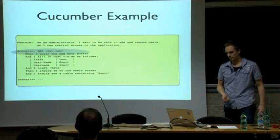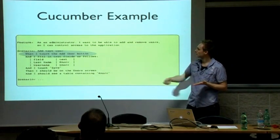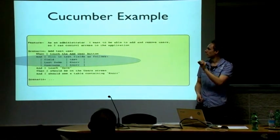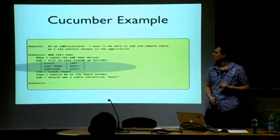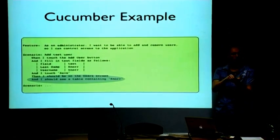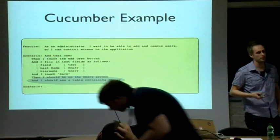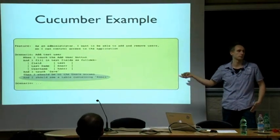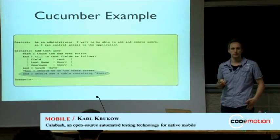Let's look at one scenario called 'add test user.' It consists of a number of steps. The first step says: 'When I touch the add user button.' Next step: 'And I fill in the text fields — the field last name should be Nor, and the field username should be nor with a small k.' Then 'I touch save.' And the last step is different — instead of 'when I do this,' it says 'then this should happen': 'I should see a table containing Nor.' That's the usual form of these Cucumber tests, and everybody can read this — you can sit down with your business people and read it. It's also an executable specification — an actual test you can run.